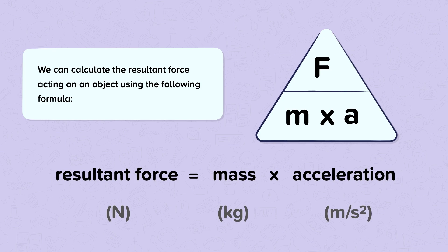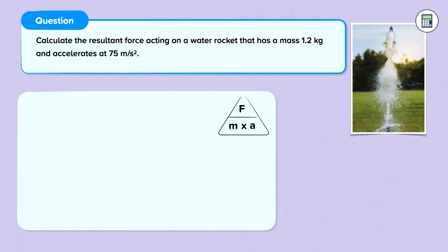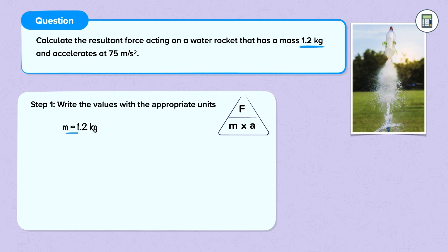Let's have a look at an example. Calculate the resultant force acting on a water rocket that has a mass of 1.2 kilograms and accelerates at 75 meters per second squared. Step one: write the values with the appropriate unit. Mass is equal to 1.2 kilograms. Acceleration is equal to 75 meters per second squared.